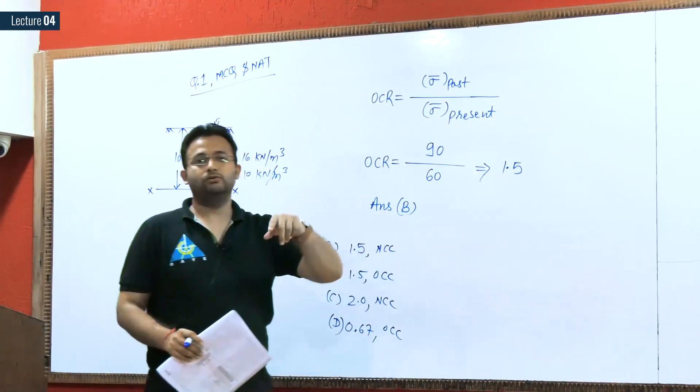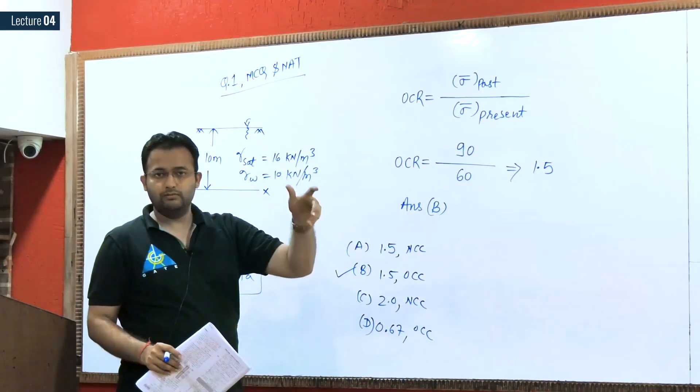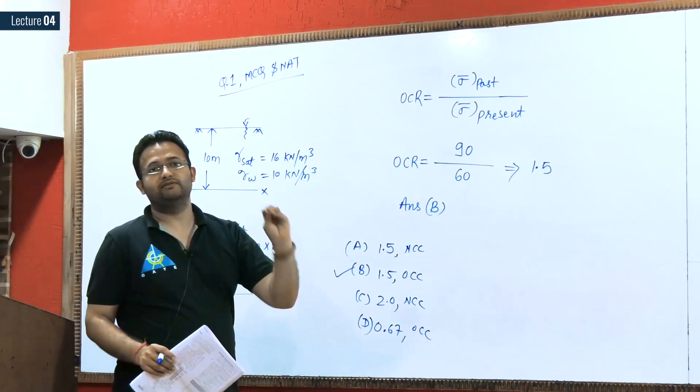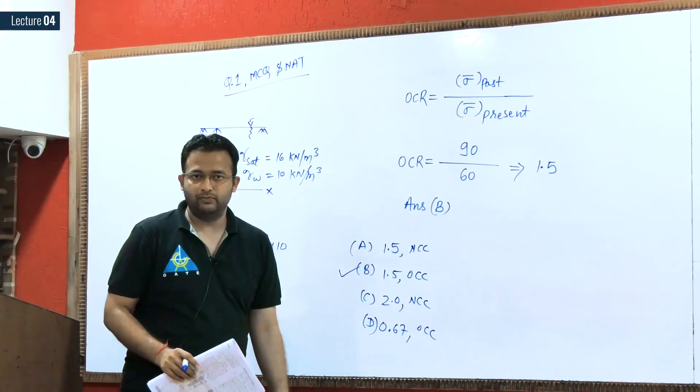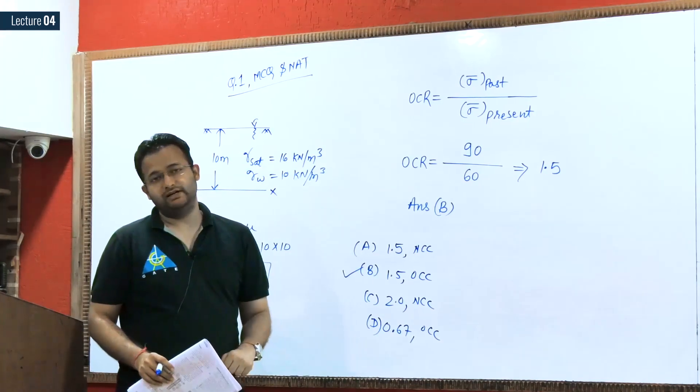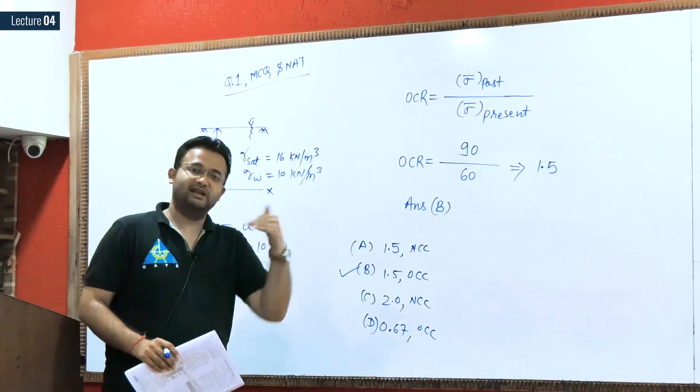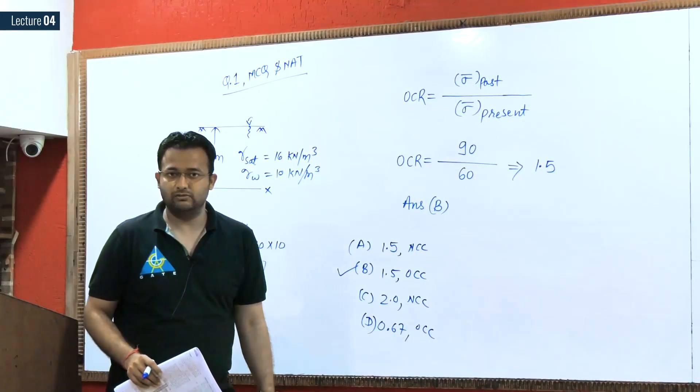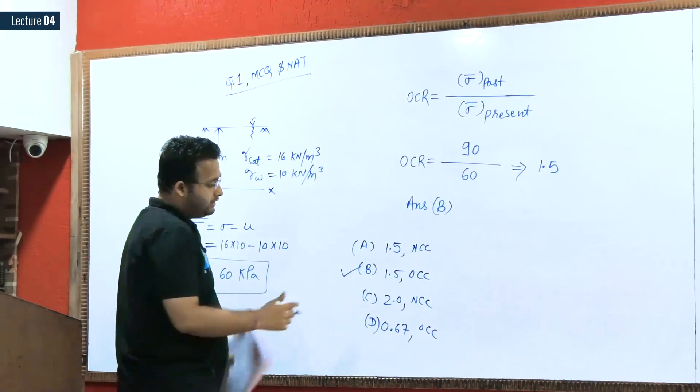So whenever you get the OCR greater than 1, the value greater than 1 indicates the soil given is your OCC soil. If you are getting exactly equal to 1, then it should be treated as a NCC soil. If you are getting less than 1, again NCC soil.